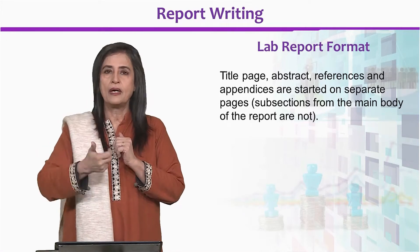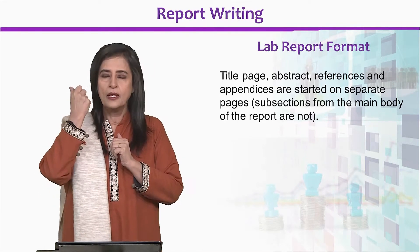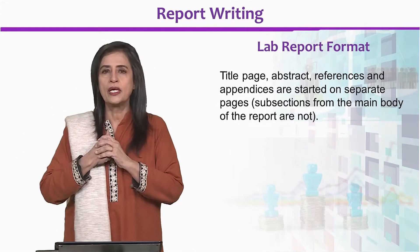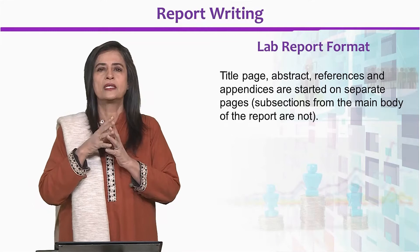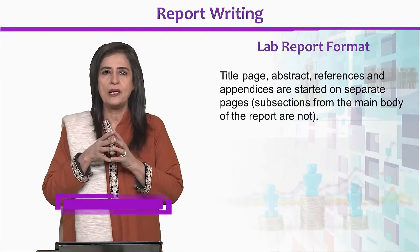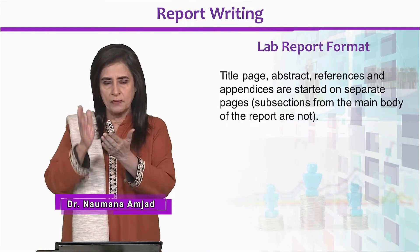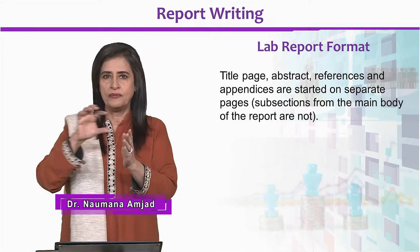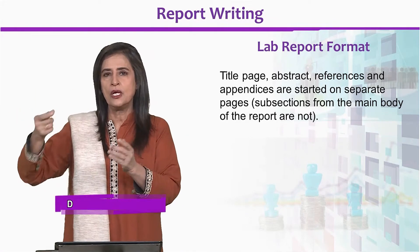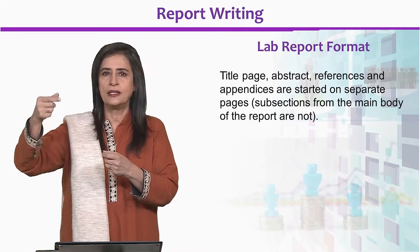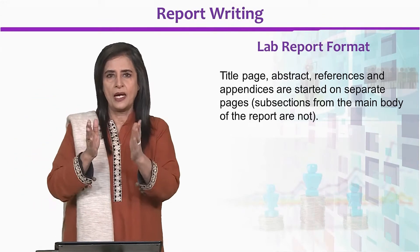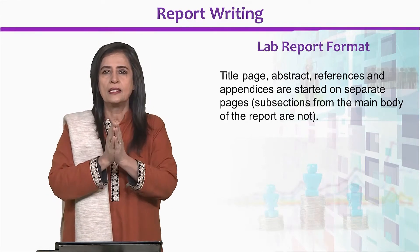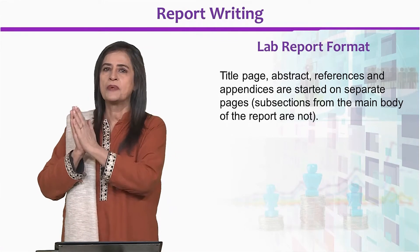Title ek page pe and doosre page pe abstract. References isi tarah discussion ke baad alag page se shuru hongi aur appendix bhi alag page se. Mostly a good well-presented report can put markers or blank pages with just the title of that section, or you can put the indicators/markers in your file or in your printed and bound copy, to indicate ke kaun sa section kahan se aapka shuru ho raha hai.